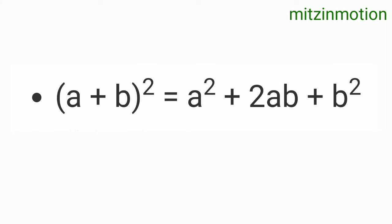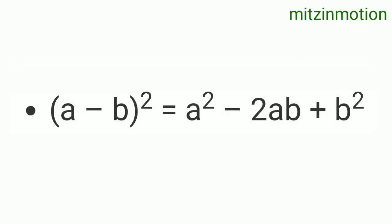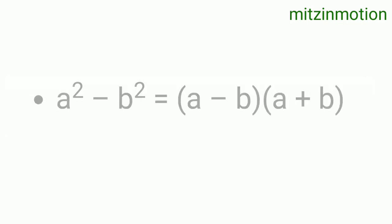The first formula is (a + b)² = a² + 2ab + b². Then (a - b)² = a² - 2ab + b². Next is a² - b², which equals (a - b)(a + b).